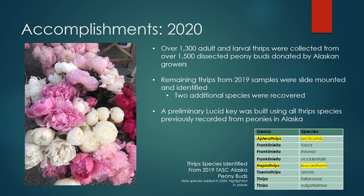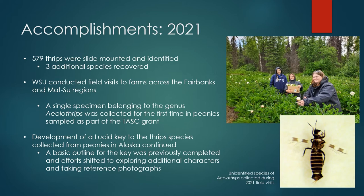In 2021, almost 600 thrips specimens from 2020 were slide-mounted and identified. Through this process, another three species of thrips were added to the total list of those collected during the TASC grant. Washington State University scientists also conducted several field visits in the Mat-Su and Fairbanks regions to meet with growers and collect additional thrips using non-destructive techniques. During one visit, a single specimen belonging to the genus Aeolothrips was collected from a peony flower — the first time a species from this group had been collected during the TASC grant. These thrips can easily be recognized by their banded wings and are thought to be facultative predators, preying on the larvae of other thrips but also feeding on pollen and flowers. The development of the lucid key continued in 2021, with the main research focus shifting to exploring additional morphological characters to add and taking reference photographs from each thrips species.